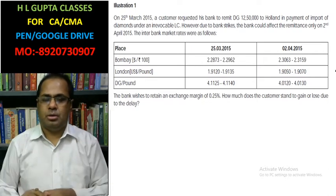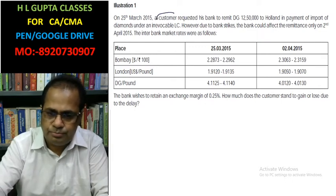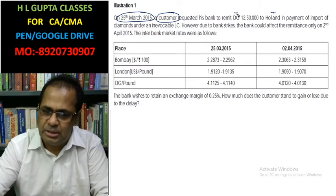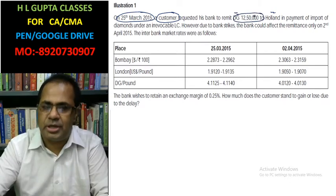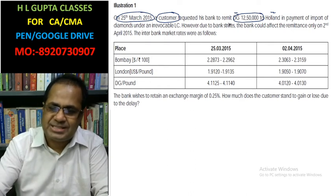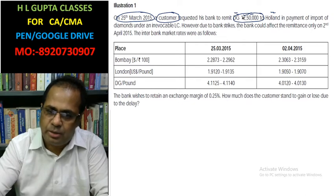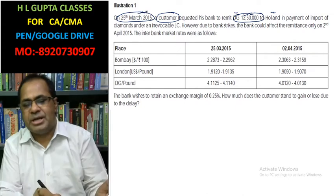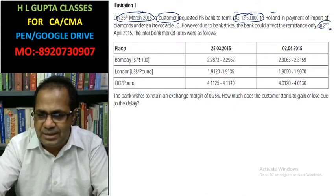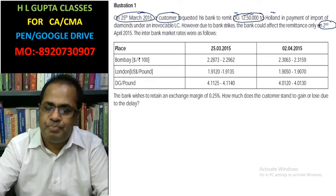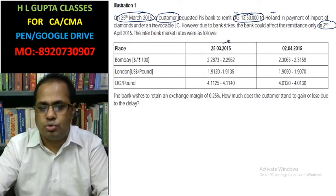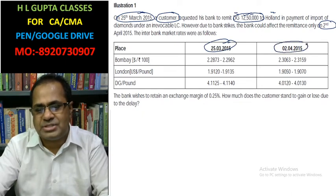A customer has to pay Holland currency — DG 12,50,000. But due to a bank strike, the bank is not able to pay DG 12,50,000 on 25th March. The bank will pay the same currency on 2nd April. We have to find the gain or loss due to not paying on 25th March and instead paying on 2nd April.